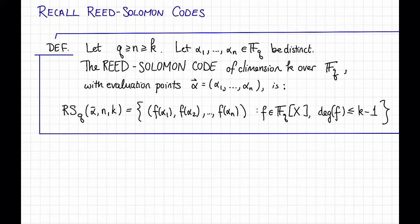We saw in a previous video that Reed-Solomon codes meet the singleton bound. This idea of evaluating low-degree polynomials and calling it a code is such a nice idea. Where did it come from, and where is it used?